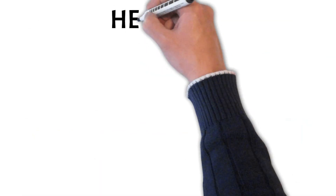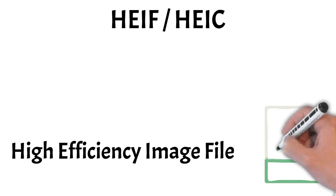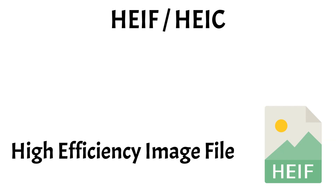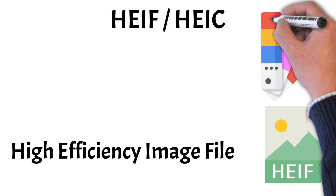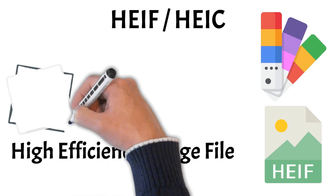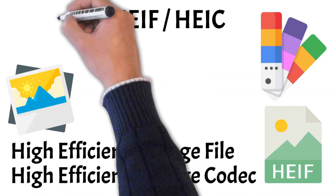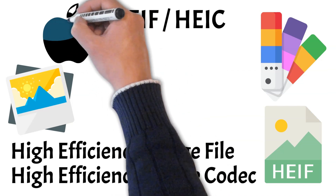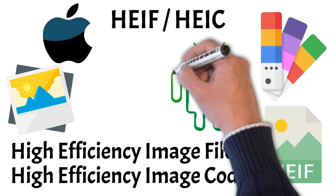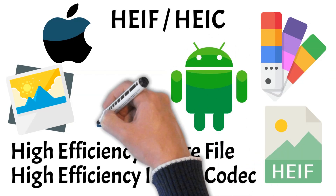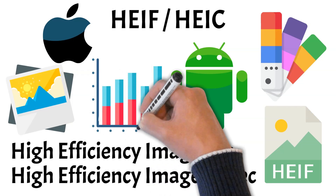Next, we have HEIF and HEIC. HEIF, or High-Efficiency Image File, is a modern image format designed to provide high-quality images at much smaller file sizes than JPEG. It supports advanced features like transparency, HDR, and even multiple images in one file, making it great for live photos and image sequences. HEIC, or High-Efficiency Image Codec, is Apple's version of HEIF, commonly used on iPhones and iPads. While HEIF offers excellent compression and quality, its limited compatibility with non-Apple devices has slowed widespread adoption. However, as support grows, HEIF is becoming a strong contender for replacing older image formats in the future.